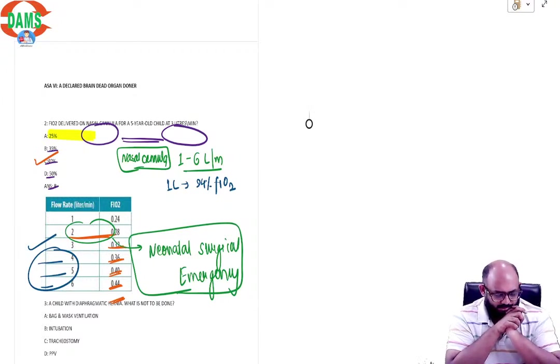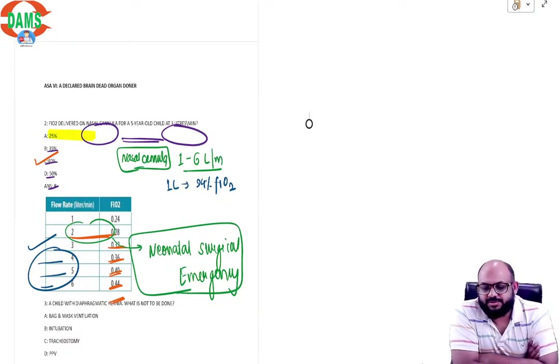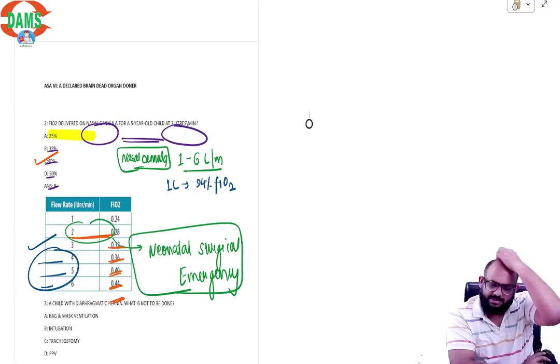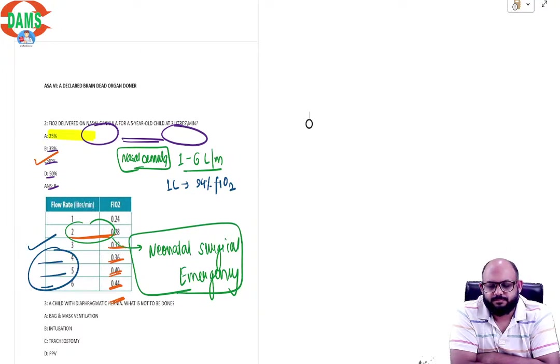Alright, so these are the three very very easy straightforward questions that were asked in anesthesia. Is there any doubt? Is this something that you want to ask me? If not, then we can go to the ophthalmology session. I am going to just wait for a minute.